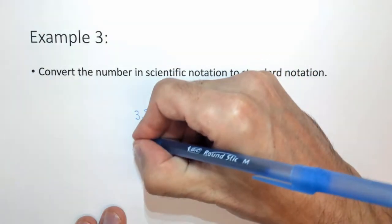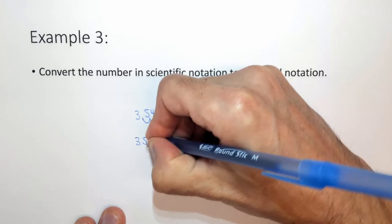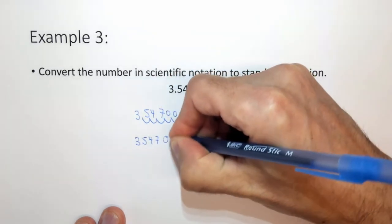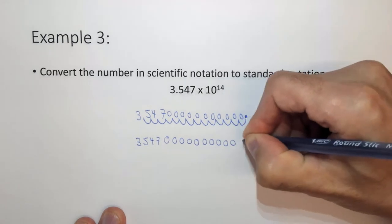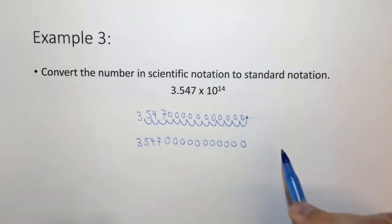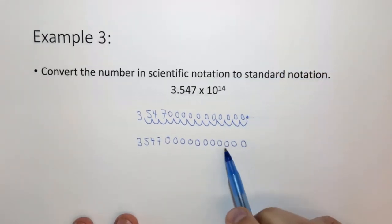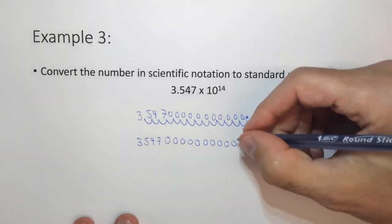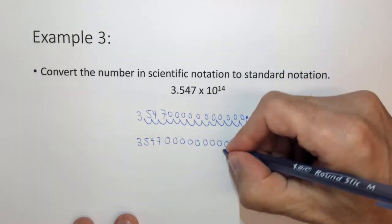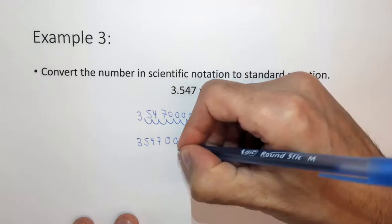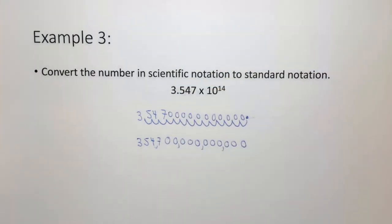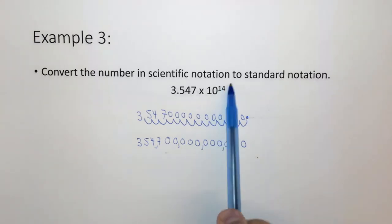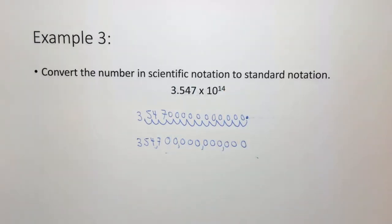So this is our number: 3, 5, 4, 7 followed by 11 zeros. In everyday usage, commas are written every three digits to make the number more readable, but this is not necessary in science — we would just write the number in scientific notation instead.